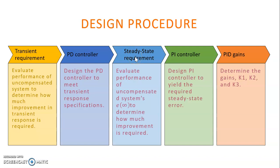After that, we simulate the system to confirm all requirements have been met, and redesign if not. The next requirement is steady state: evaluate performance of the uncompensated system, then design the PID controller to yield the required steady state error. Finally, determine the gains K1, K2, and K3, and simulate again to verify all requirements are satisfied.